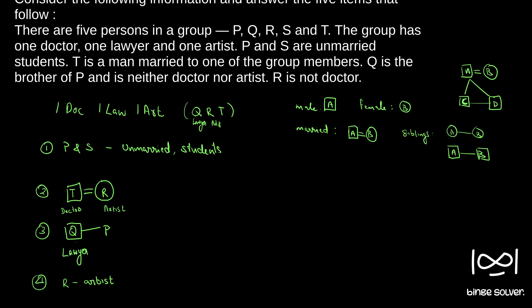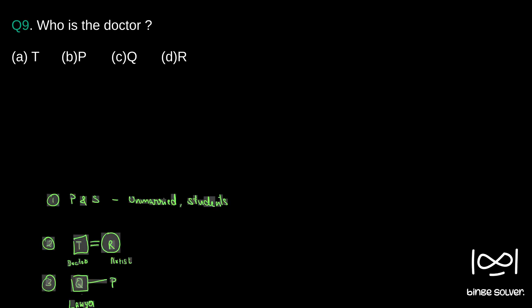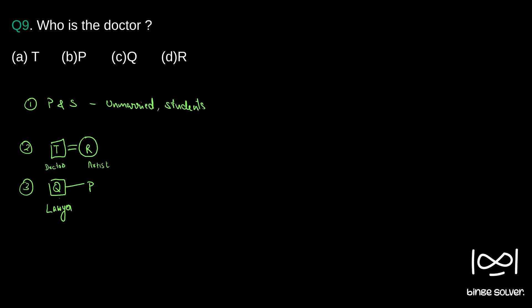We will take up the five questions one by one. First question: Who is the doctor? The doctor is T. So we have A as the answer — T is our doctor.